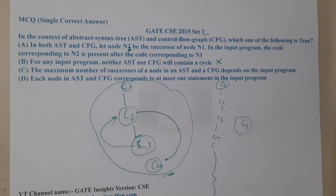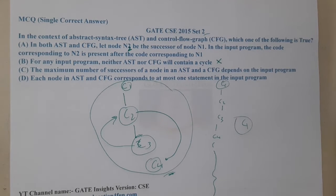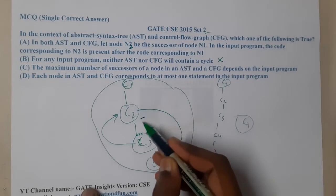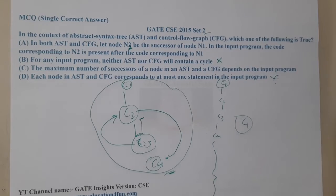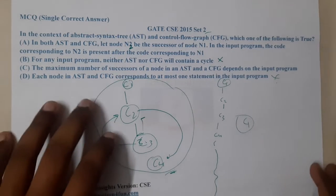Option C says the maximum number of successors of a node in an AST and CFG depends on the input program. Option D says each node in AST and CFG corresponds to at most one statement in the input program. But if you observe, a node like C2 can target two statements depending on the context, so option D is also false — we can eliminate it.